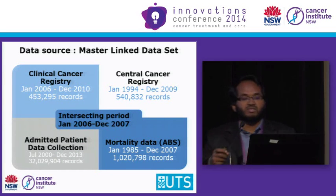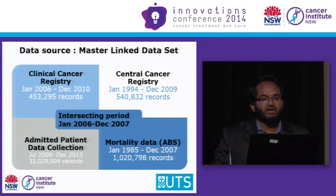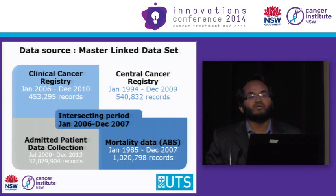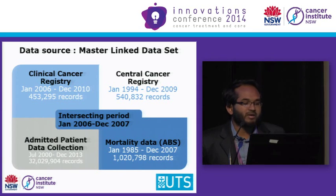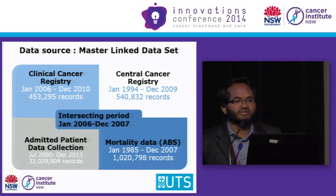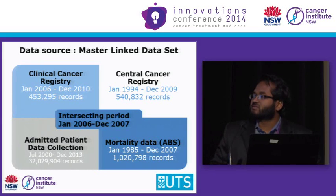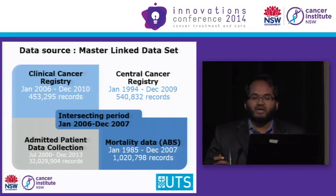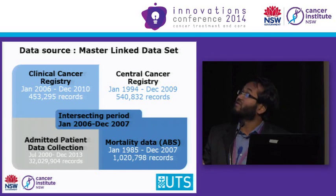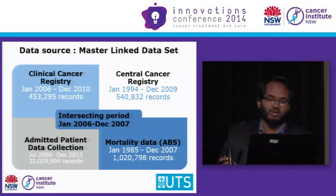Though a huge amount of data is available here — almost 32 million records are available in the APDC — we have only an intersecting period of two years. This makes the dataset a bit shorter, but in terms of being more usable.